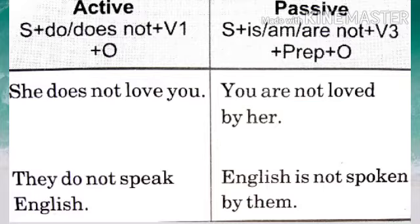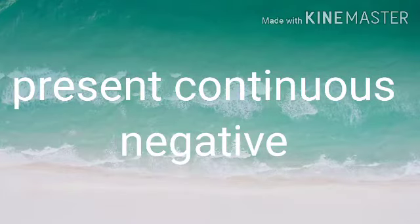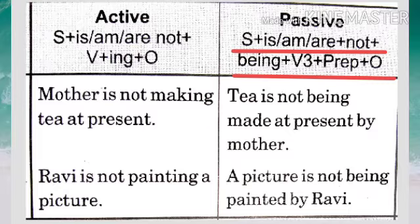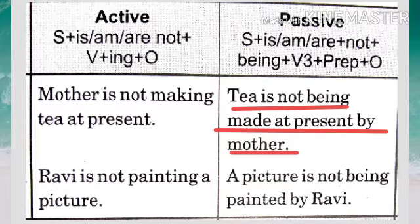Now let's do a negative sentence in present continuous tense. 'Mother is not making tea at present.' Remember, you have to use the present continuous passive rule and include 'not' as well. The rule is: subject + is/am/are + not + being + third form of verb + preposition + object. So 'Mother is not making tea at present' changes to: 'Tea is not being made at present by mother.'